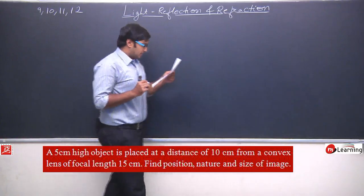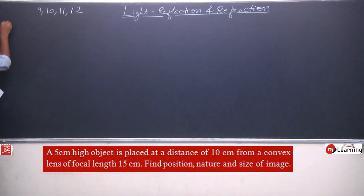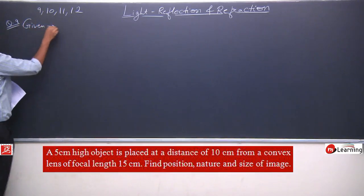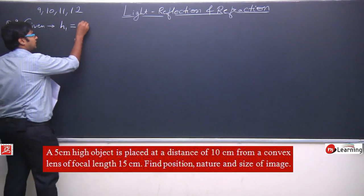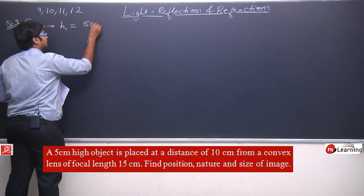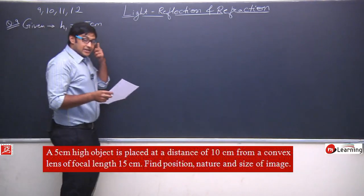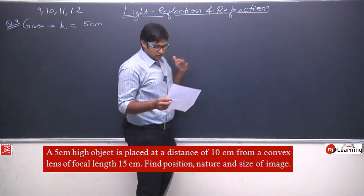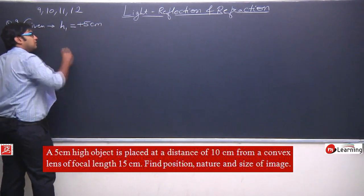In this question, a 5 centimeter high object is given. So in the given data, the first thing given is h1, means height of object, that is equals to 5 centimeters. Object hum maante hai left side mein aur principal axis ke upar. Toh agar principal axis ke upar object hai, iska sign hoga positive.